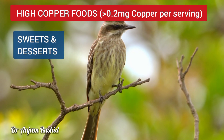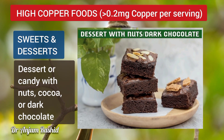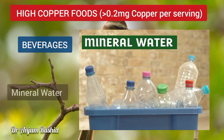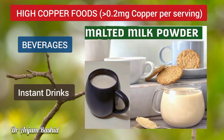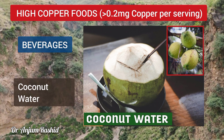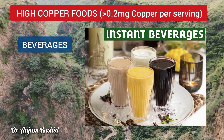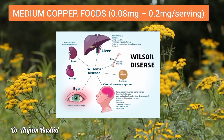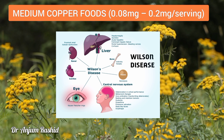High copper sweets and desserts include trail mix, desserts or candies with nuts, cocoa, or dark chocolate. High copper beverages include mineral water, spring water, instant drinks such as Horlicks or Maltova, coconut water, vegetable juices, canned beer, instant breakfast beverages, and brewer's yeast.